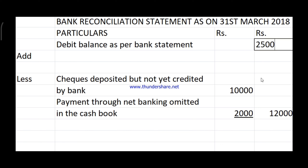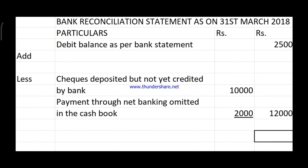Those are the only two transactions given. Add up the two amounts in the less category: 10,000 plus 2,000 gives 12,000. The debit balance as per bank statement was 2,500. Since we have nothing in the add category, we do 2,500 minus 12,000.